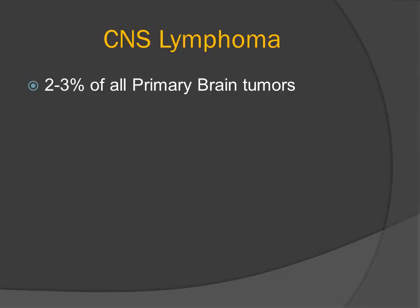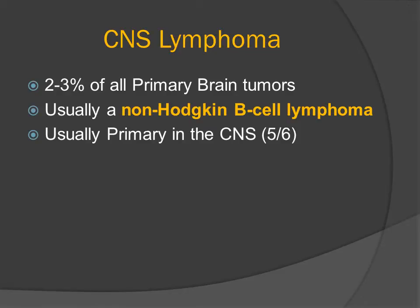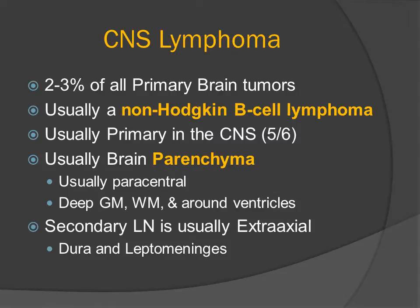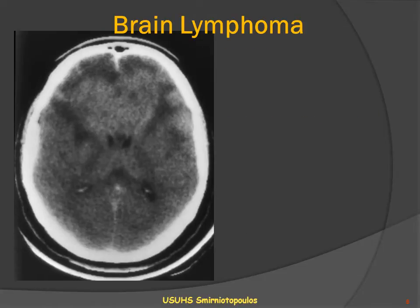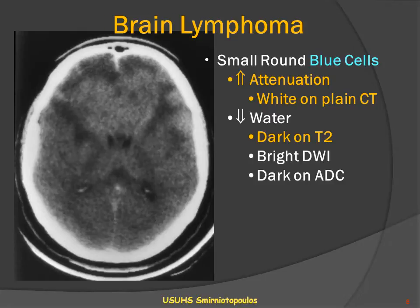Let's talk a little bit more about CNS lymphoma. CNS lymphoma represents 2-3% of all primary brain tumors. It is usually a non-Hodgkin's B-cell lymphoma, usually primary within the central nervous system without any extra-CNS locations. It's usually within the brain parenchyma in a paracentral deep location involving both the gray matter and the white matter, and it may spread around the ventricles. In contrast, secondary CNS lymphoma is usually extra-axial involving the dura and/or the leptomeninges. Primary brain lymphoma typically presents as a hyperattenuating lesion on the non-contrast CT scan because this is a classic small, round blue cell tumor. Because the cells have a lot of DNA and are very closely packed, they can attenuate the X-ray beam.